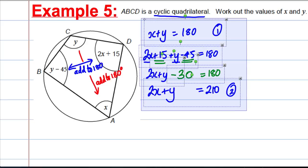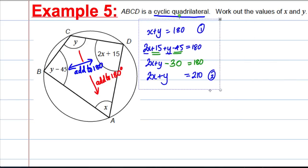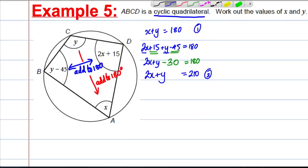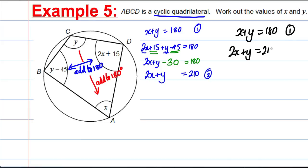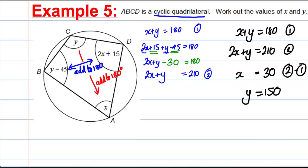Our two equations: X plus Y equals 180 (equation 1) and 2X plus Y equals 210 (equation 2). Taking equation 2 minus equation 1: 2X take away X is 1X, Y take away Y is nothing, 210 take away 180 is 30. So X is 30. Substituting back: Y equals 150. Checking: 30 and 150 add to 180. 2 times 30 is 60, plus 15 is 75, and 150 take away 45 is 105. These two add to 180 — correct.